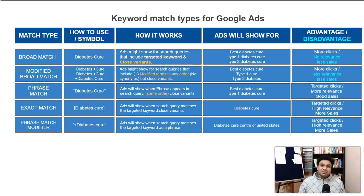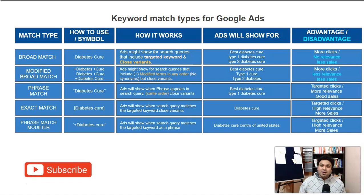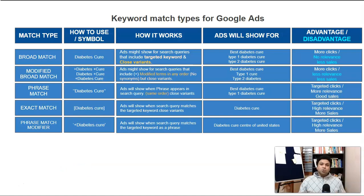Make sure you watch Part 1 of this series, where I covered quality score and how to increase it. This is Part 2 on keyword match types. If you got value, smash the like button, share this video, and leave a comment — I read all comments. Subscribe to my channel, and I'll see you in Part 3. If you haven't watched Part 1, watch it now — it'll guide you on how to rank your Google Ad in the search engine result page to get more clicks at lower cost.